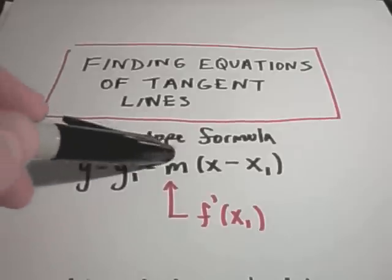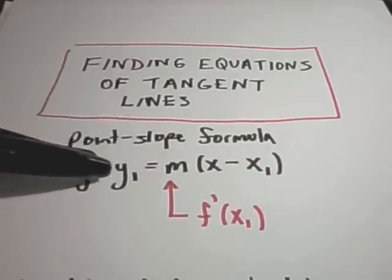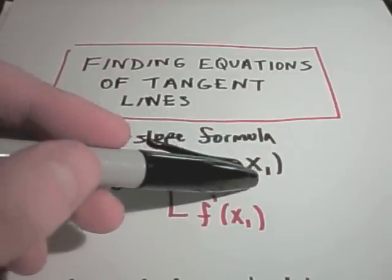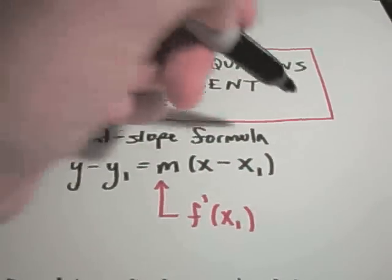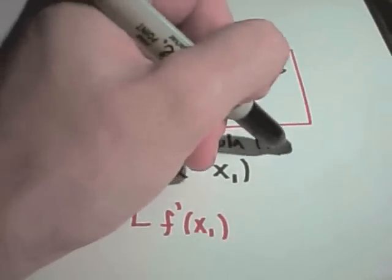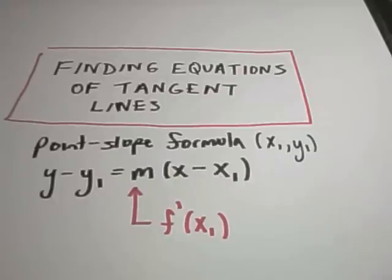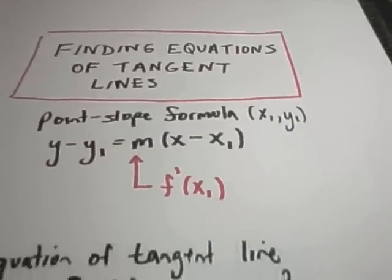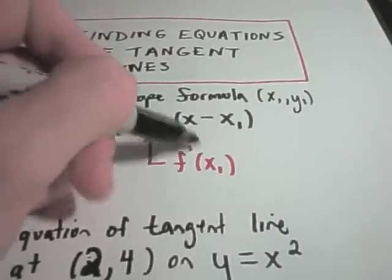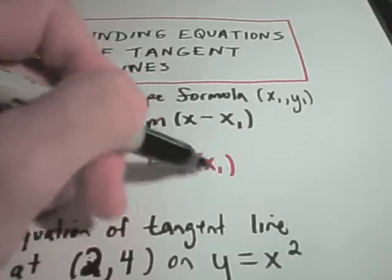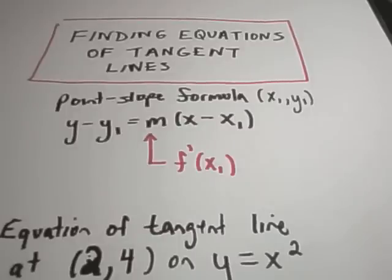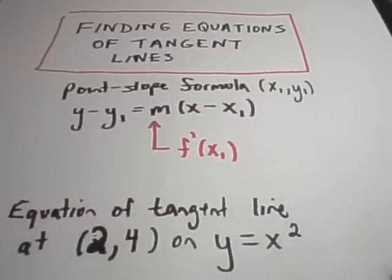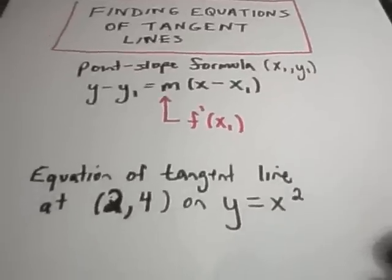The point-slope formula is an equation of a line with slope m that goes through the point (x1, y1). To get the slope to plug into the formula, that's what the derivative does. You simply take the derivative and plug in the x-coordinate that you're interested in finding the slope at, and that gives you your slope and the equation of the line.